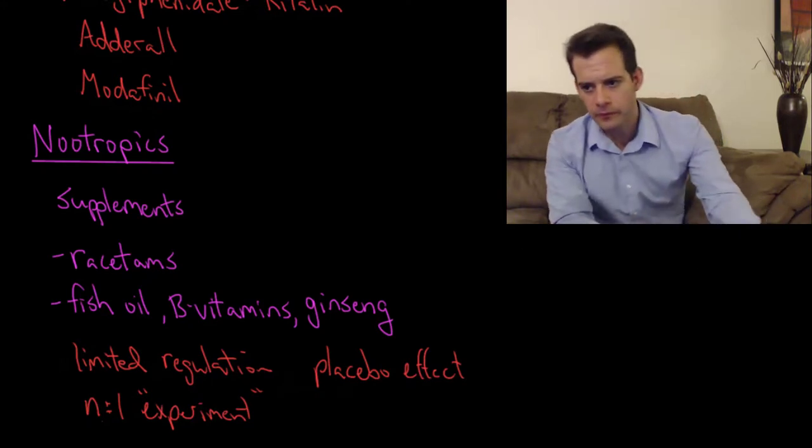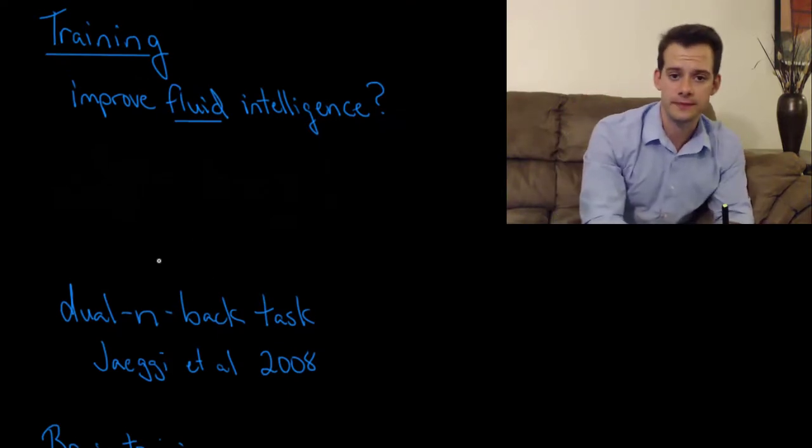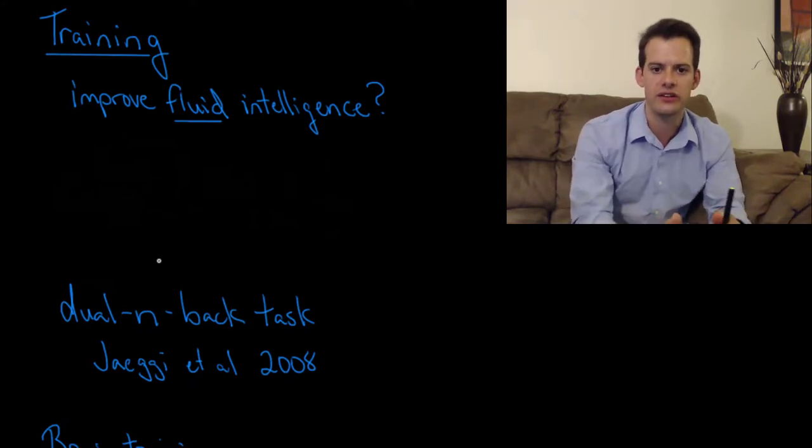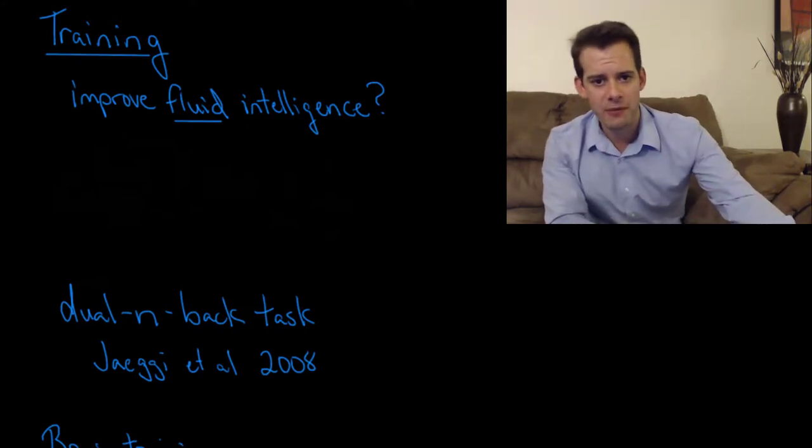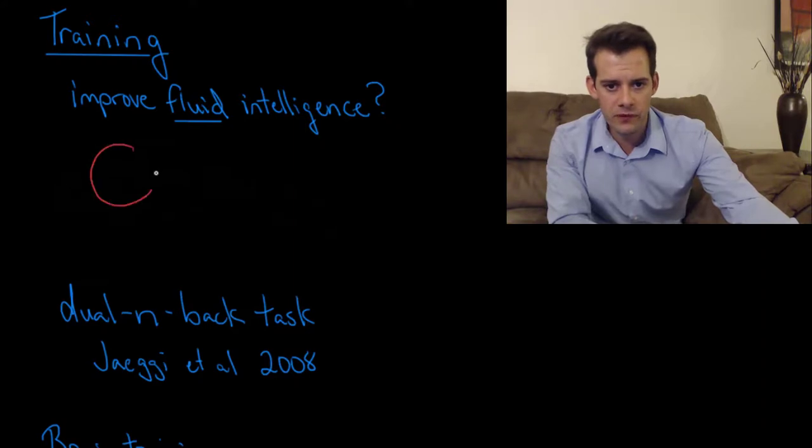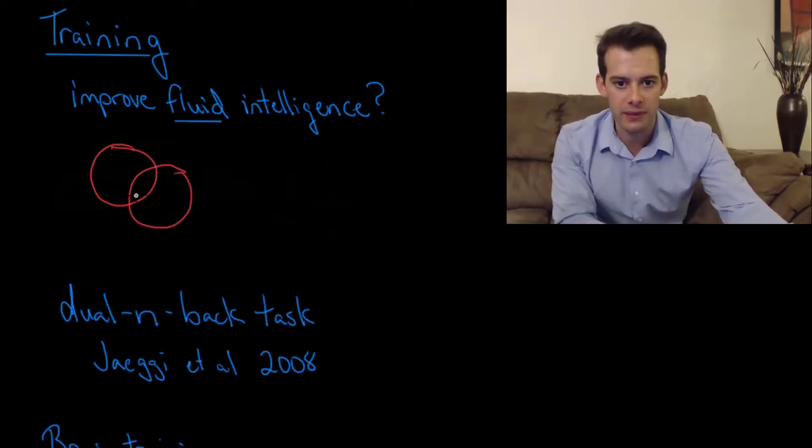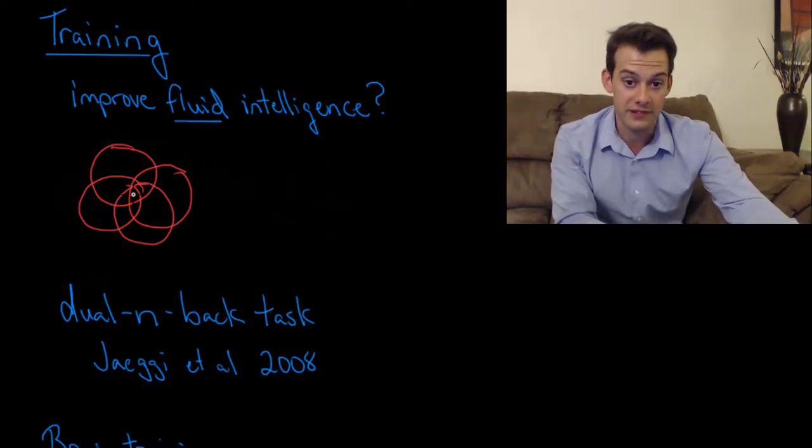Okay, so a third way that people try to influence their cognitive abilities is through training. Now we know that we can improve our abilities in particular skills by practicing. So training does work. We know that we can increase our crystallized intelligence, but the question is can we improve our fluid intelligence? So one way to think about your fluid intelligence is to imagine that you have all your verbal abilities here and you have your mathematical abilities and maybe you have some spatial abilities, and whatever sort of different abilities we want to include in the concept of intelligence, which as we've seen can be difficult to determine.